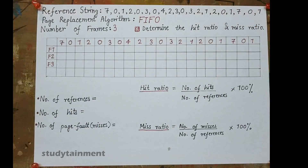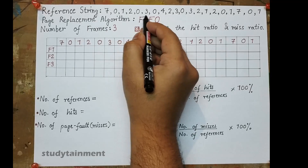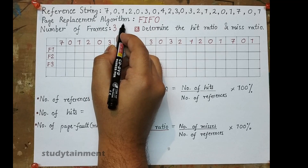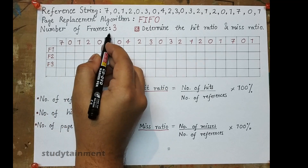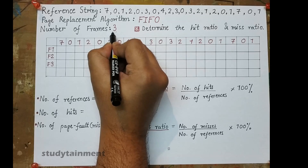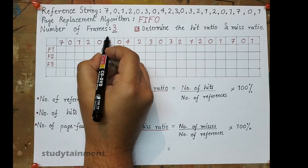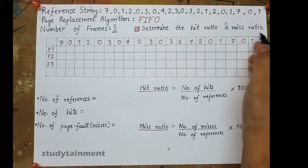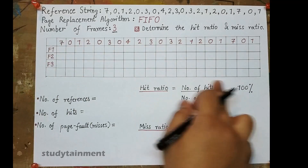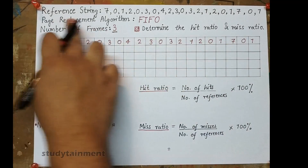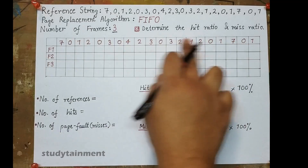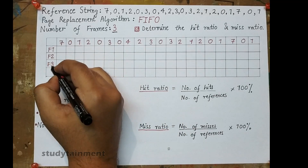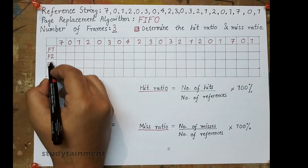The reference string is 7, 0, 1, 2, 0, and so on, and we have to apply the FIFO page replacement algorithm. The number of frames is given as 3 — this number is very important. We are given to determine the hit ratio and the miss ratio. We have to prepare a chart and assign the reference string at the top, with F1, F2, and F3 as the three frames.